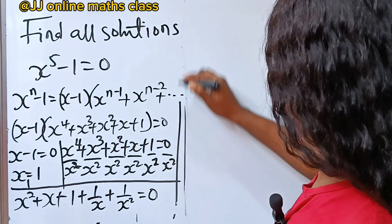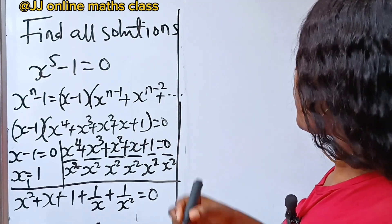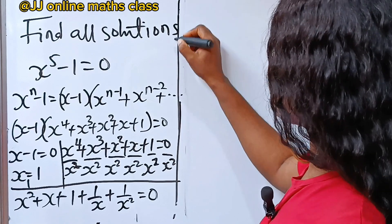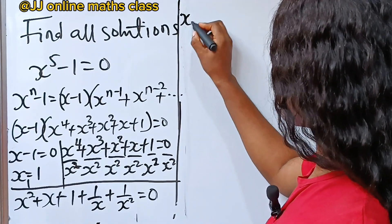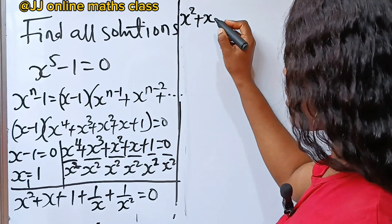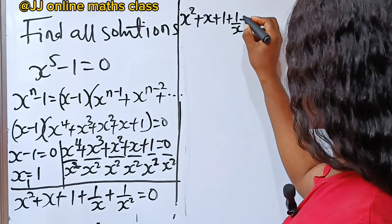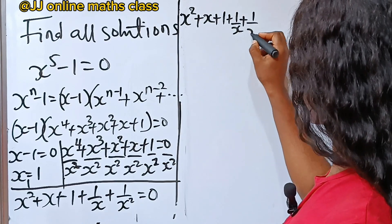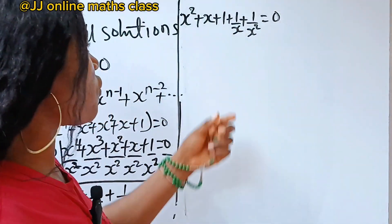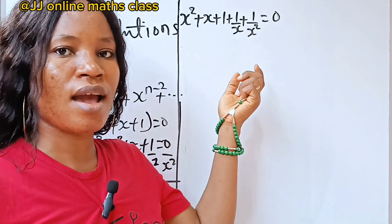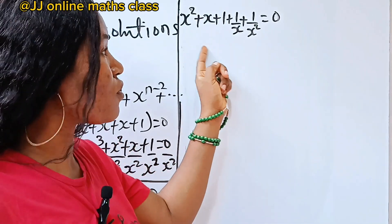So this is what we have right now: x squared plus x plus 1 plus 1 over x plus 1 over x squared is equal to 0. Now we are solving for the value of x — let's try to form a quadratic equation from this.